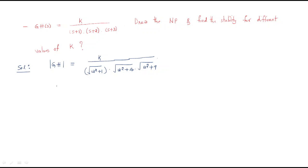This is the magnitude. Now what about phase? We have to find out the phase. The phase is 0 minus tan⁻¹(ω/1) minus tan⁻¹(ω/2) minus tan⁻¹(ω/3).